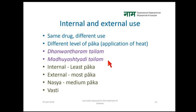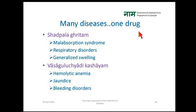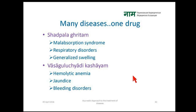For example, Dhanantharam Tailam and Madhuyashtyadi Tailam are oils used for different purposes. Many diseases can be treated with the help of only one drug. For example, the oil called Shatpala Ghrita is used for malabsorption syndrome, respiratory disorders, and generalized swelling in the body — seemingly very different conditions — because this medicine helps to correct Agni, and all these diseases are produced due to imbalance in Agni. Vasagni Chyavana Prasha is a decoction which can be used for different conditions like hemolytic anemia, jaundice, and bleeding disorders. The nasal and rectal routes of administration of medicine — as in Nasya — are also used, as Ayurveda considers the nose as the window to the head and the body as a tree with the rectum as its root.